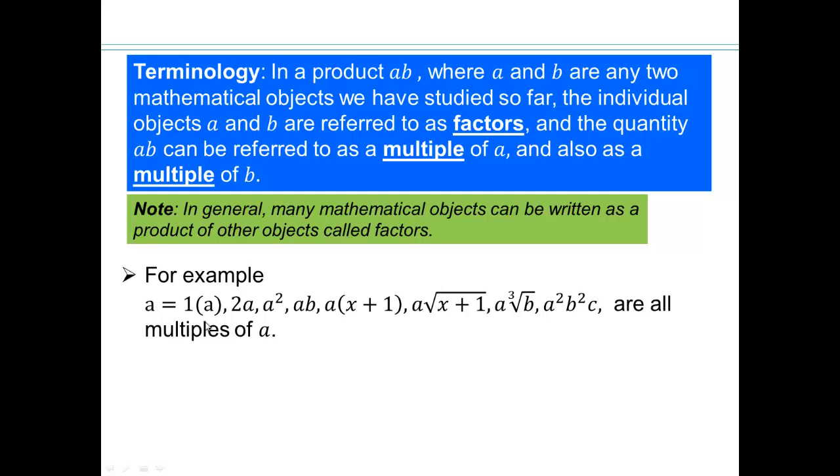For example, A is a multiple of itself because A can be written as 1 times A. 2A is a multiple of A because it's 2 times A. A squared is a multiple of A because it's A times A. AB is a multiple of A because it's A times B. So any time you have A times something, A times x plus 1 is a multiple of A. These are all multiples of A.